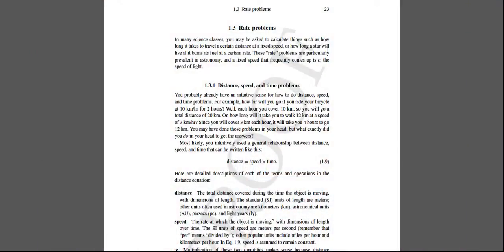The mathematical relationship between those three quantities is given in equation 1.9 on page 23: distance equals speed times time. One important thing for this equation is that speed must be constant for the equation to be valid, so acceleration must be zero. And if speed is constant, then distance is proportional to time.